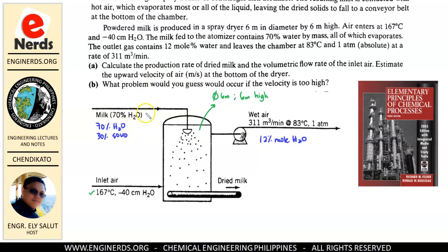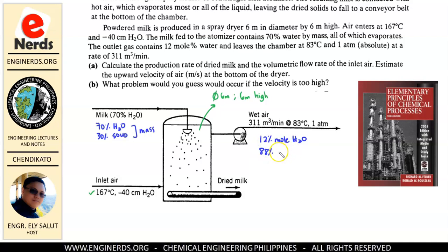We need to properly identify the percentages because our outlet gas percentage is given in mole percent. The outlet leaves at 83 degrees Celsius, 1 atmosphere absolute, at a rate of 311 cubic meters per minute. We have 12 mole percent water, therefore the remaining 88 percent is the dry air. The water comes from our milk feed and the dry air comes from the inlet air. This is our final dried milk product.